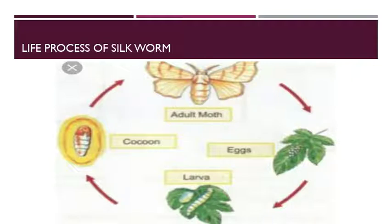The moths die immediately after laying eggs. In nature, this life cycle occurs once a year, but under experimental setup it can occur up to three times a year.